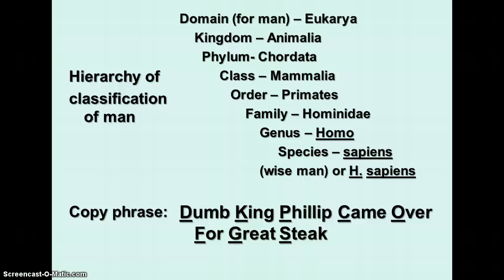You have to know these categories and which one is the biggest and smallest. An easy way to remember things in order like that is to have a phrase or sentence. Here's one: 'Dumb King Philip came over for great steak.' You can make up your own sentence — the one I learned in high school before we had domains was 'keep putting cookies out for Girl Scouts.' The key is to know the order: domain, kingdom, phylum, class, order, family, genus, and species.